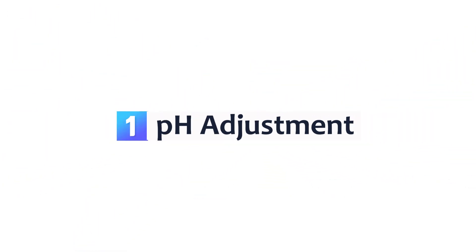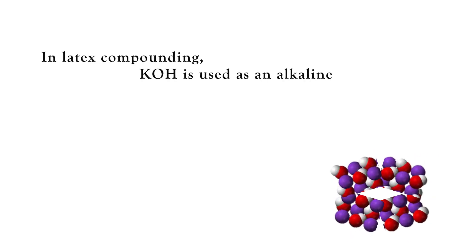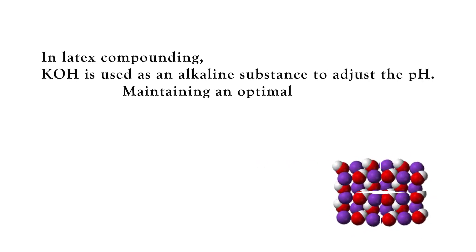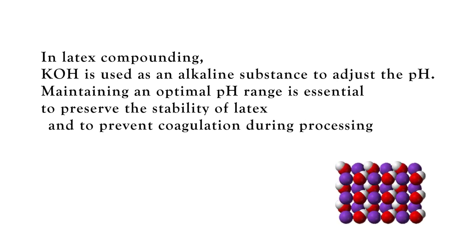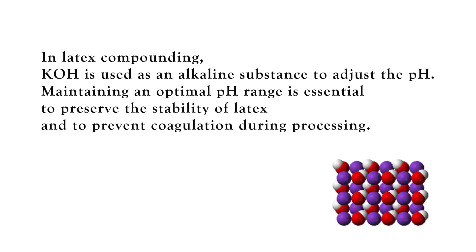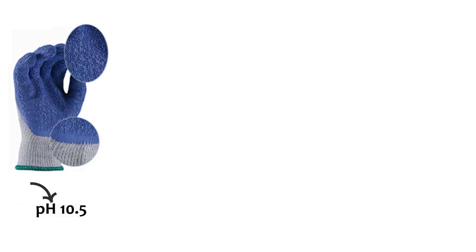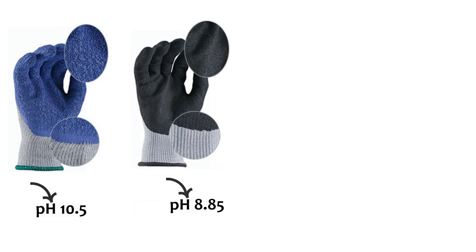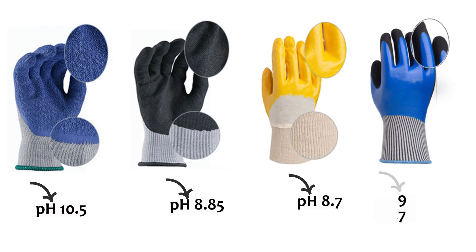pH adjustment. In latex compounding, KOH is used as an alkaline substance to adjust the pH. Maintaining an optimal pH range is essential to preserve the stability of latex and to prevent coagulation during processing. By adding KOH, the pH of the compound can be increased, helping to keep the latex particles in a stable state.